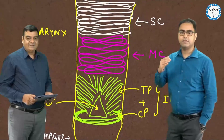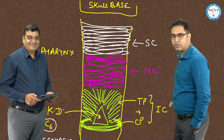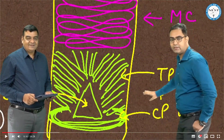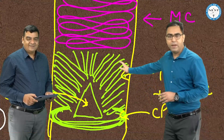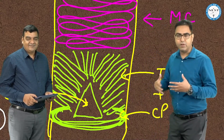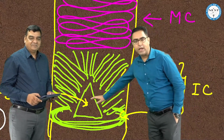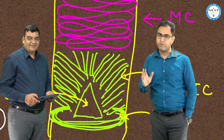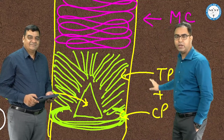First question: Killian's dehiscence belongs to which muscle? The answer is the inferior constrictor. The inferior constrictor has got two types of fibres: oblique fibres called thyropharyngeus (TP) and circular fibres called cricopharyngeus. Between these two fibres — the oblique and the circular — there is a triangular area which does not have any muscular support, and this triangular area is called Killian's dehiscence. As came in the last FMG, Killian's dehiscence belongs to the inferior constrictor. Correct.